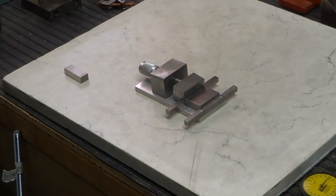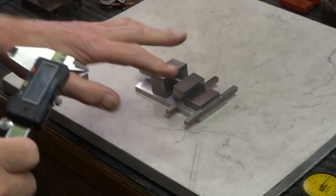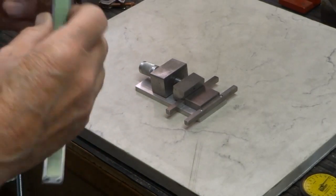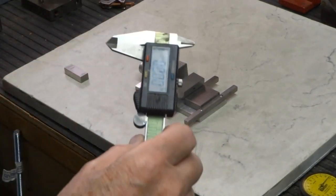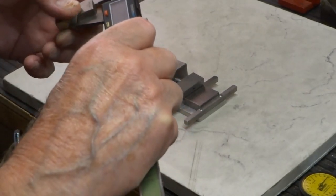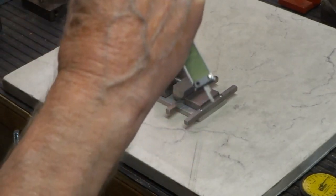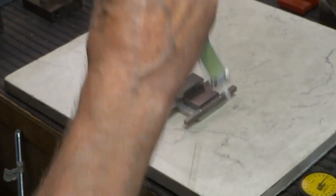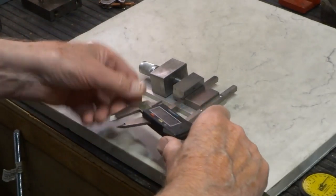Now we're going to just for the fun of it check the accuracy of this to our digital caliper. And these digital calipers aren't really that wonderful either. We've got a half inch gauge block here. I'm going to measure that with the digital caliper and it's pretty good, point five zero zero.